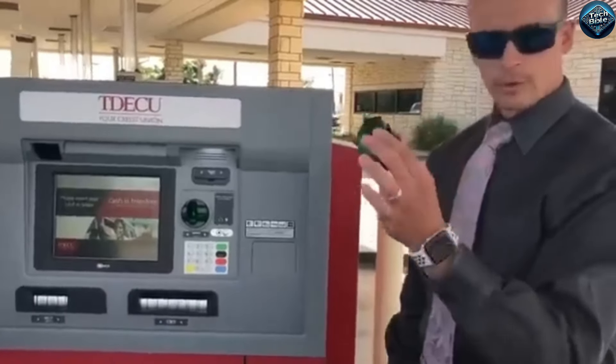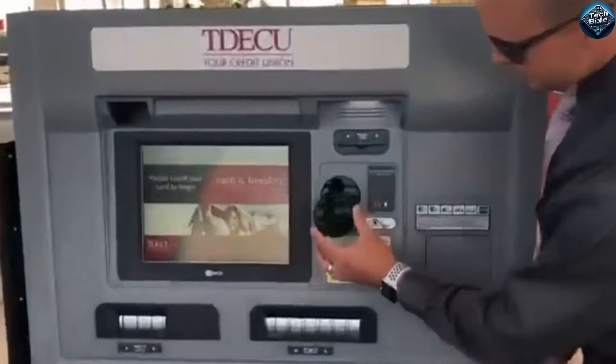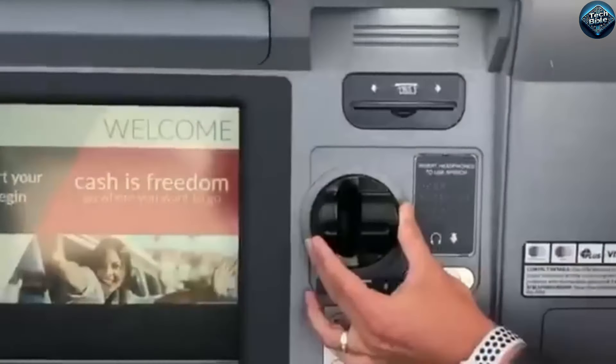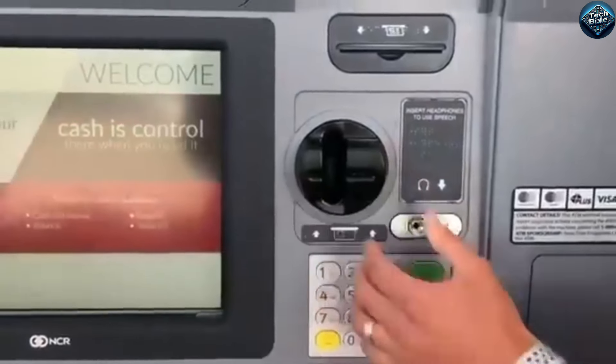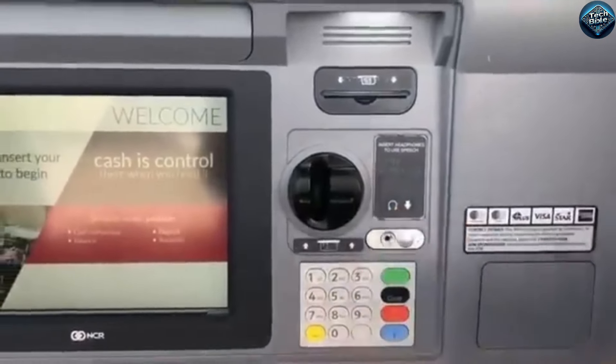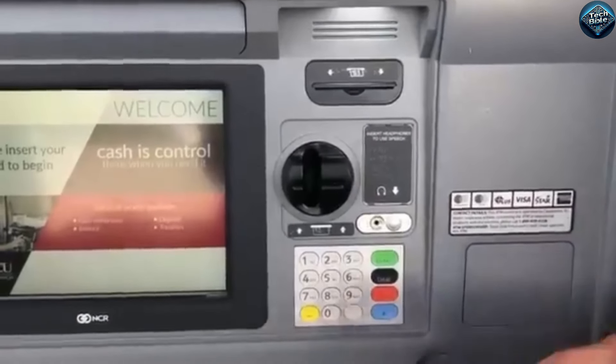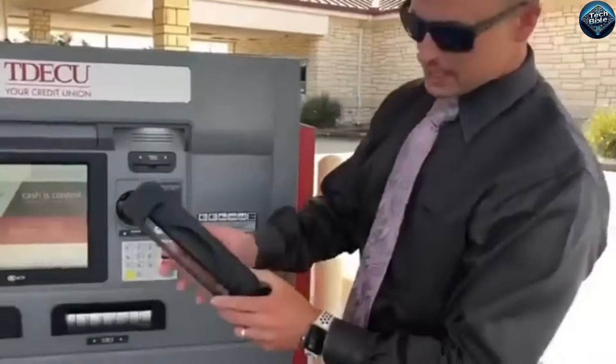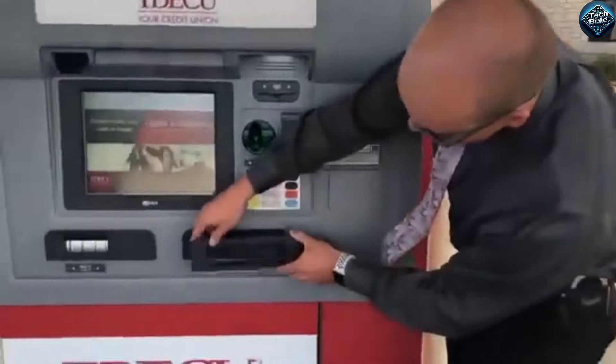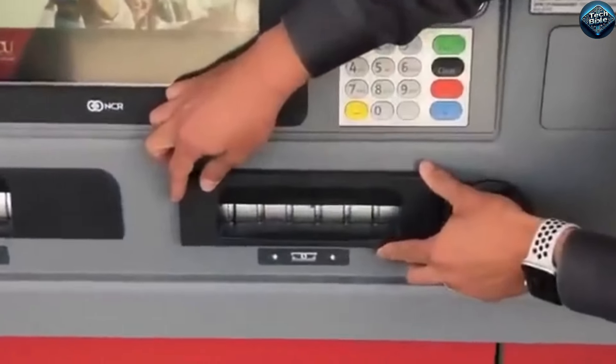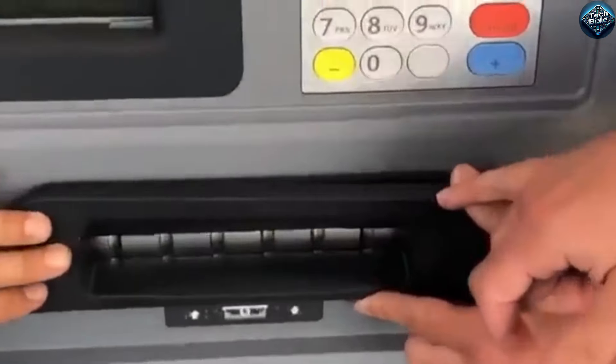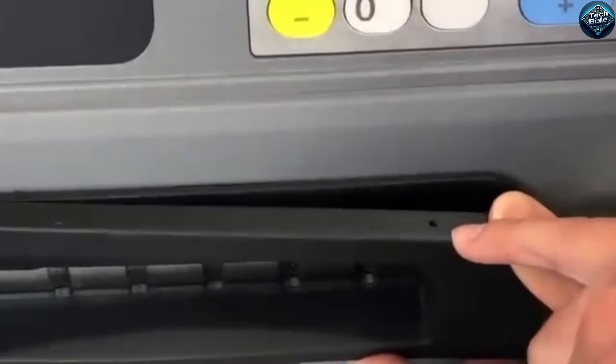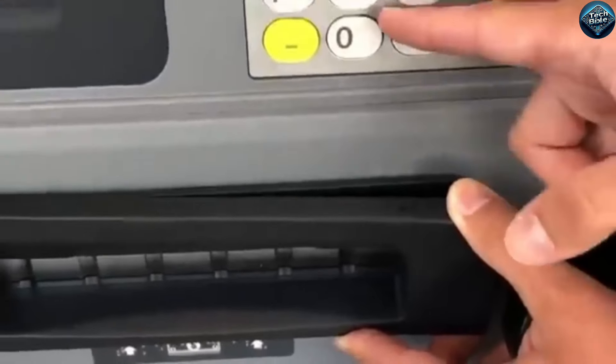ATM skimmers are sophisticated devices that criminals use to clone credit and debit cards at ATMs. These illicit gadgets are typically attached to ATM card readers, capturing the magnetic stripe information from unsuspecting users' cards. Coupled with a hidden camera or keypad overlay, skimmers can also record pins, making it easier for thieves to access bank accounts.